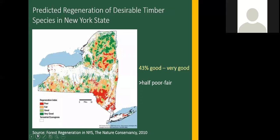When they looked at just valuable timber species — things like maple, oak, and ash — the situation looked more bleak. Only 43% of forests would be good to very good, and over half would be poor to fair. A lot more areas, including much of the Adirondacks, start to look not so good. It's not just the economic impacts of losing those timber species — it's also a proxy for forest diversity. Species like oak tend to be good wildlife food-producing species, so it has implications for wildlife diversity as well.